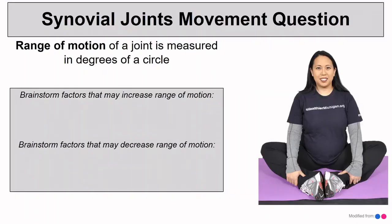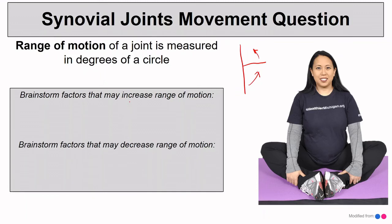Range of motion is measured in angles. For example, at the elbow in anatomical position it is at 180 degrees, and we can bend it up to 90 degrees or more. Many different factors can affect this range of motion. The actual structure of a joint — including bones, ligaments, and muscles involved — may allow or limit movement. Tighter or looser muscles or ligaments can affect range of motion.